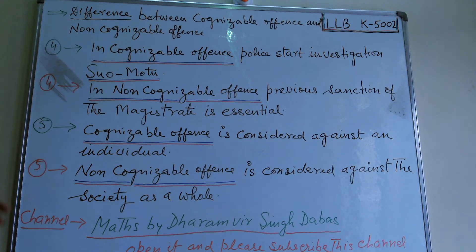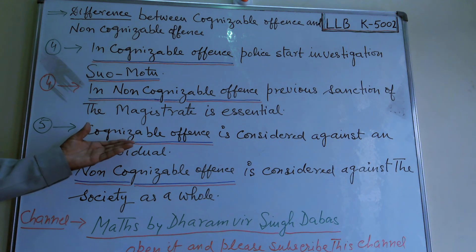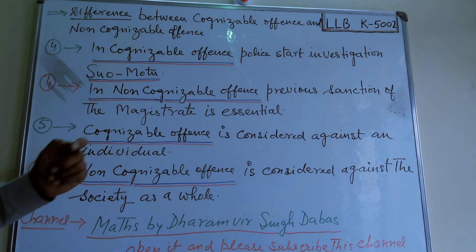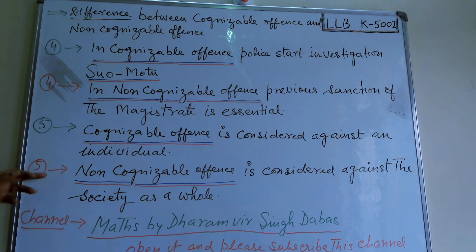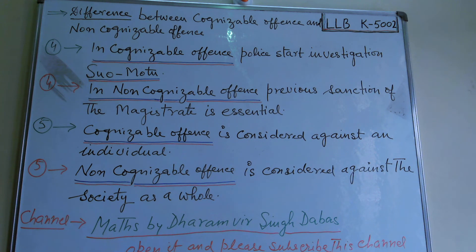Fifth point of difference: a cognizable offense is considered against an individual. In contrast, a non-cognizable offense is considered against society as a whole. This is the fifth difference between cognizable offense and non-cognizable offense.